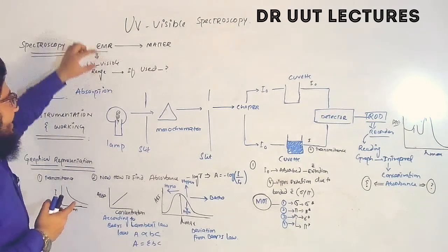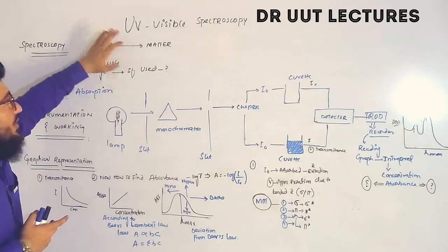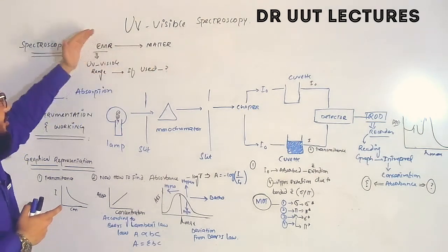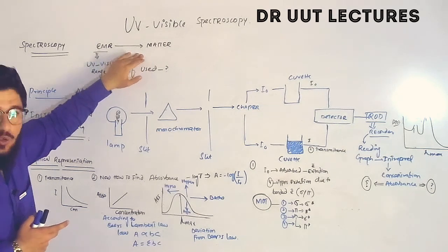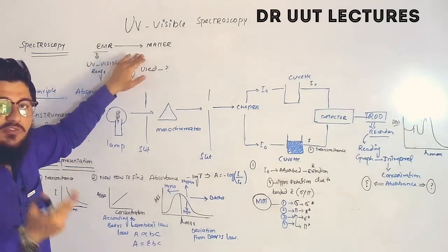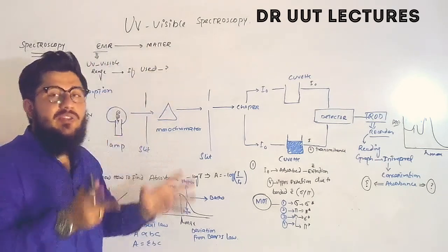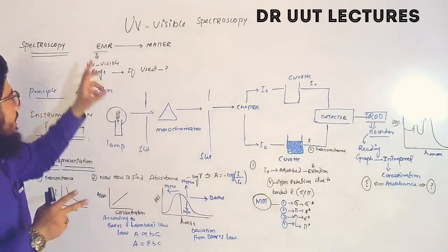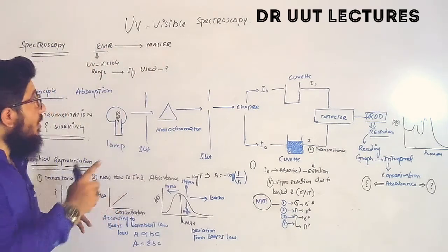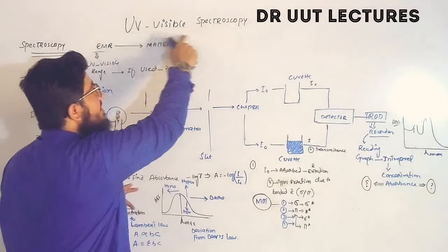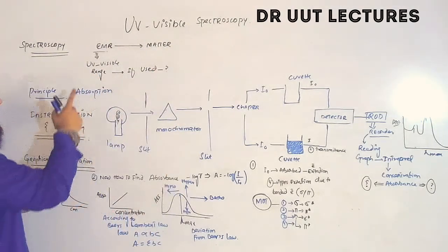What is spectroscopy? It is actually the interaction of electromagnetic radiations with matter. When electromagnetic radiations interact with matter, this is called spectroscopy. This interaction is of different types — the matter may absorb these radiations, may emit, or may do anything with the radiation. In short, EMR interacting with matter is called spectroscopy.